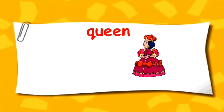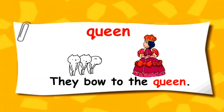The word is QUEEN. Children, look at the word and repeat after me: Queen. Who is the queen? We all know this. Let's look at the picture. You can see a queen here. Queen is usually referred to as the female ruler of a country or the wife of a king. We can use the word QUEEN in a sentence like: They bow to the queen. You can see three people bowing to the queen.